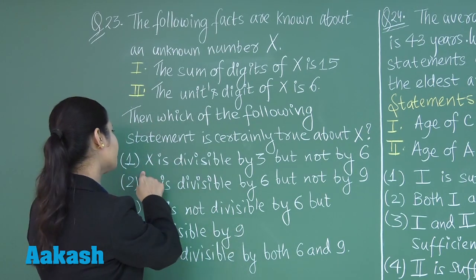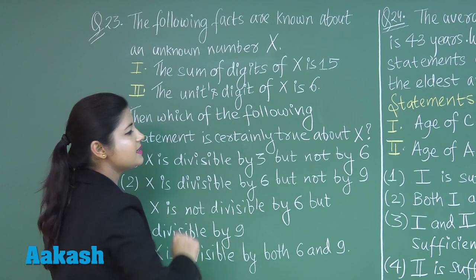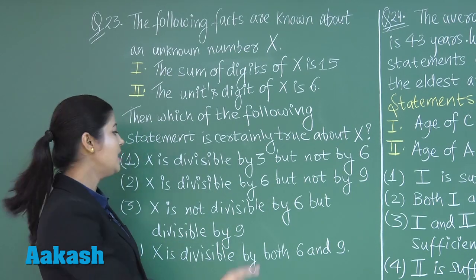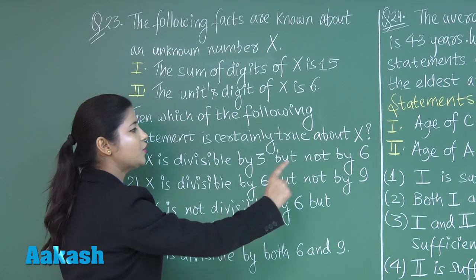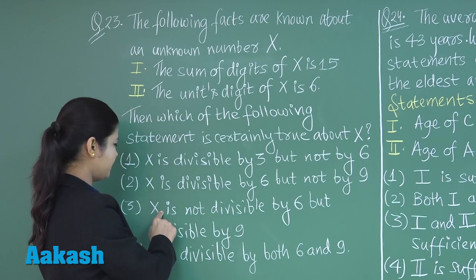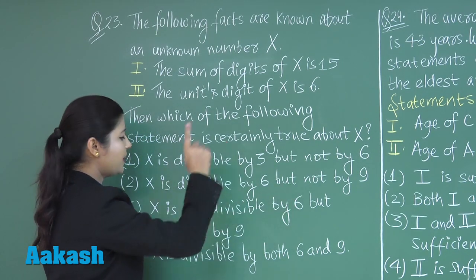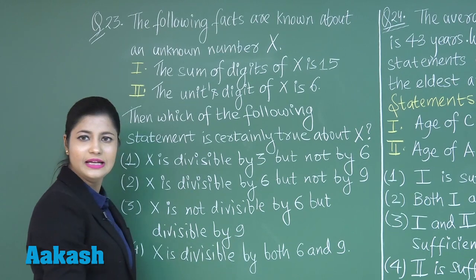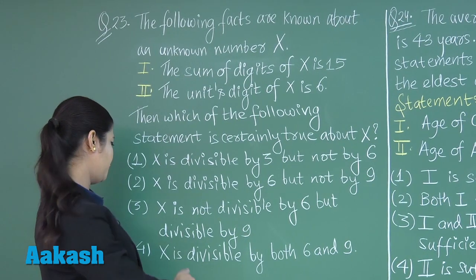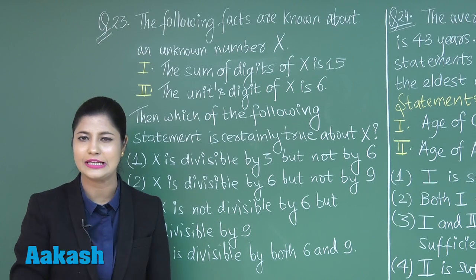Option 1: x is divisible by 3 but not by 6. Option 2: x is divisible by 6 but not by 9. Option 3: x is not divisible by 6 but divisible by 9. And option 4: x is divisible by both 6 and 9.